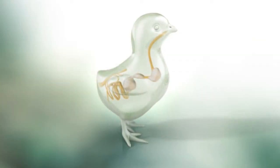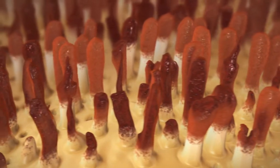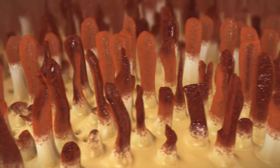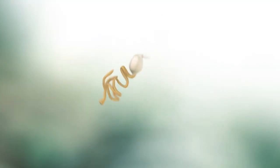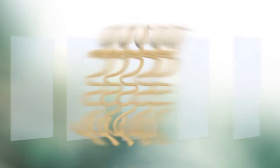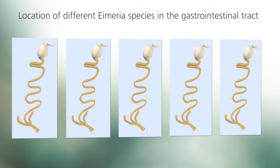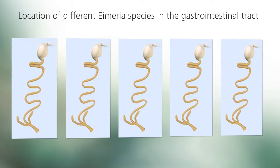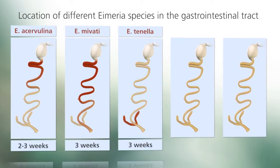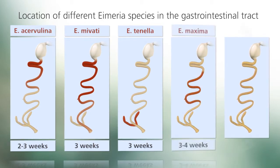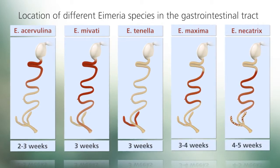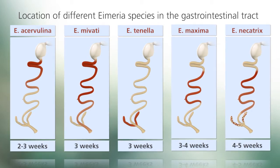In the ceca of the affected bird, Eimeria tenella causes massive cell damage and hemorrhage that can result in death. Through repeated exposure to Eimeria species reproducing inside the birds, immunity to coccidiosis develops in the flock. Some species reproduce in high numbers and therefore induce immunity quickly, while others with a lower reproductive rate can take longer. Immunity to one species does not cross-protect against the others.